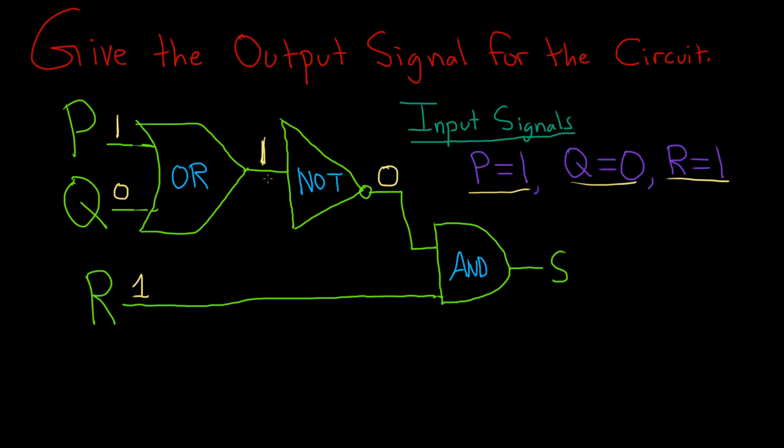Think of 1 as true and 0 as false. Then you have 1 entering the NOT gate, so that negates it, turns it into a 0, and that puts us here.